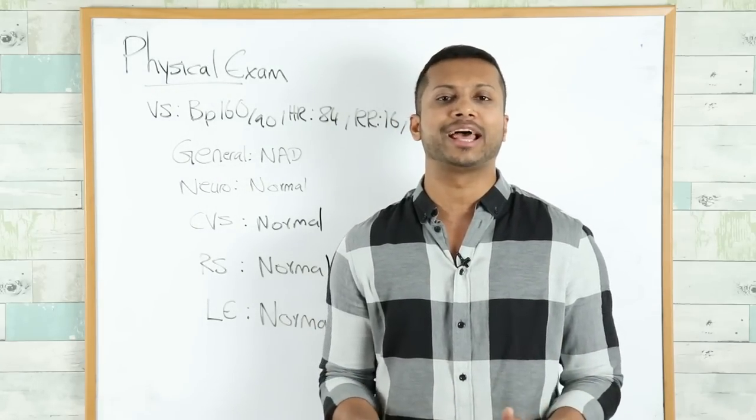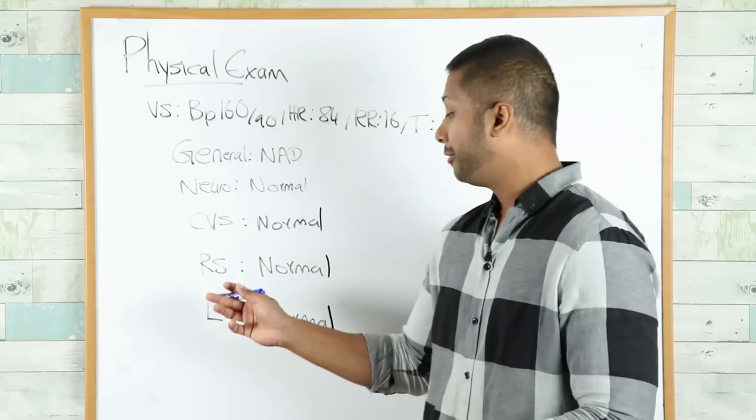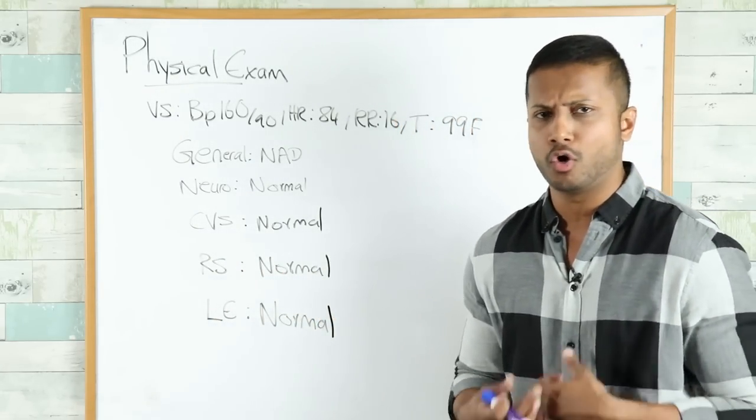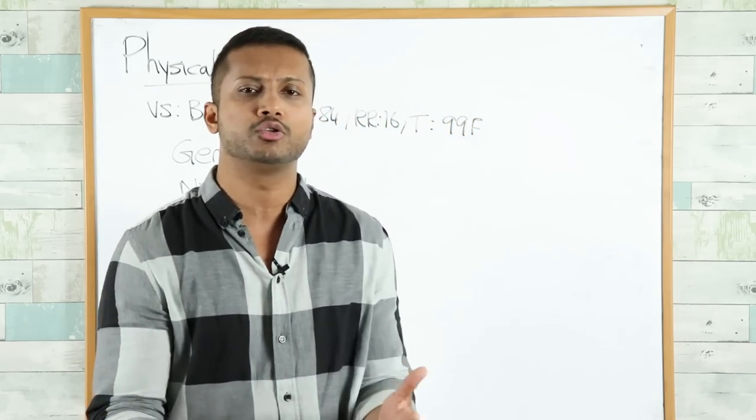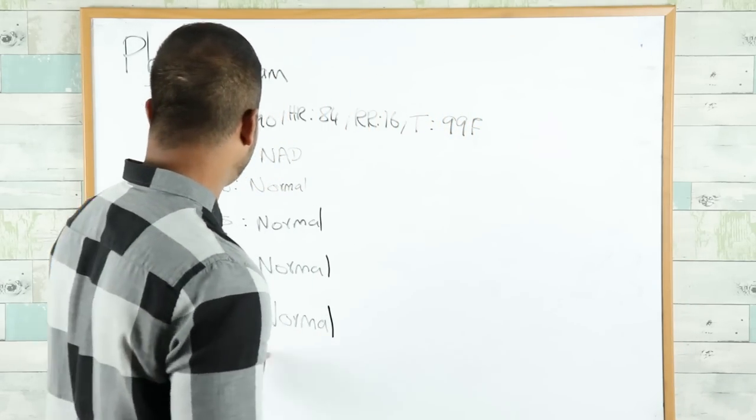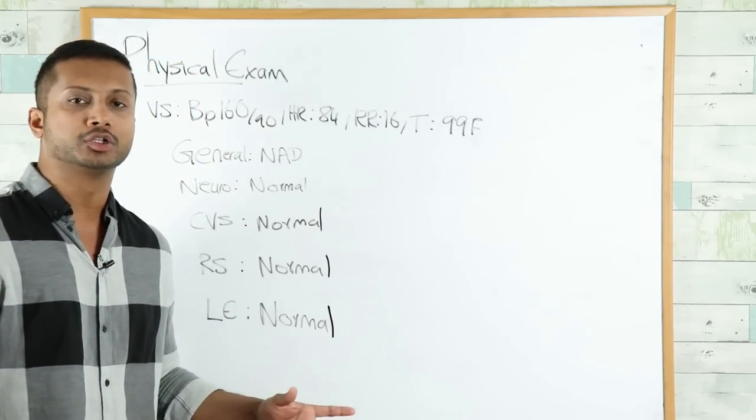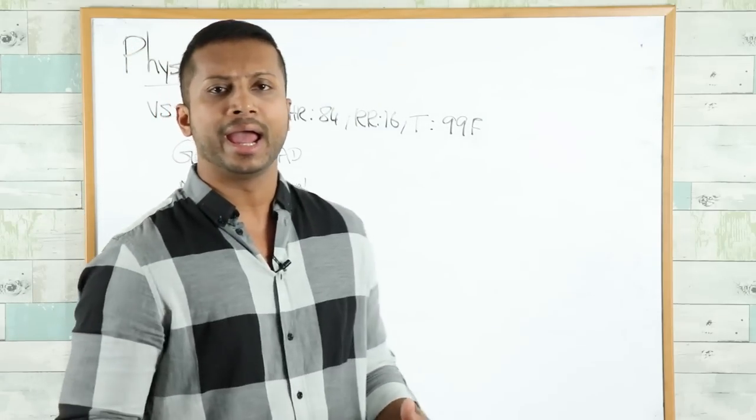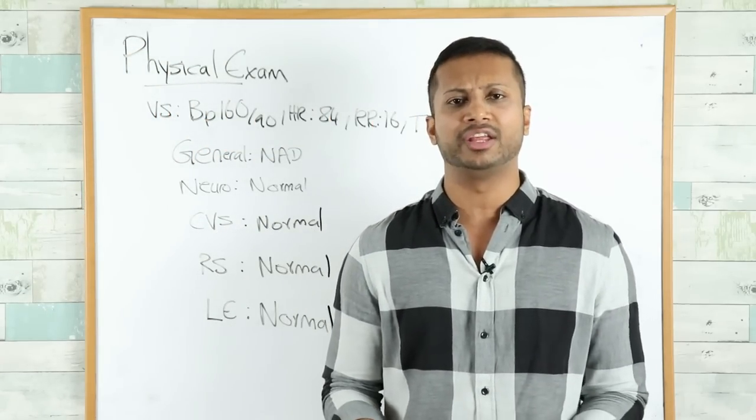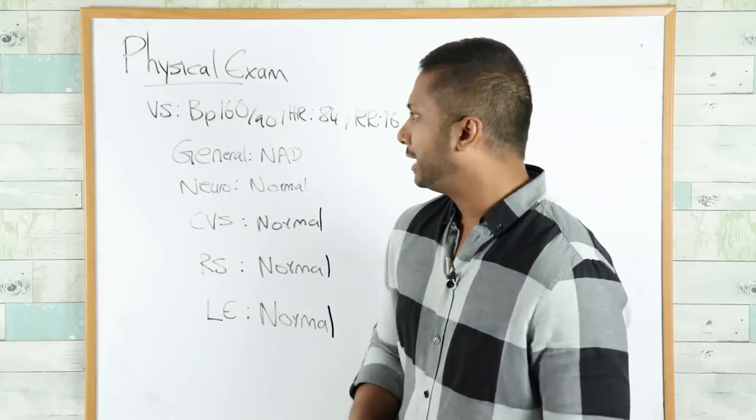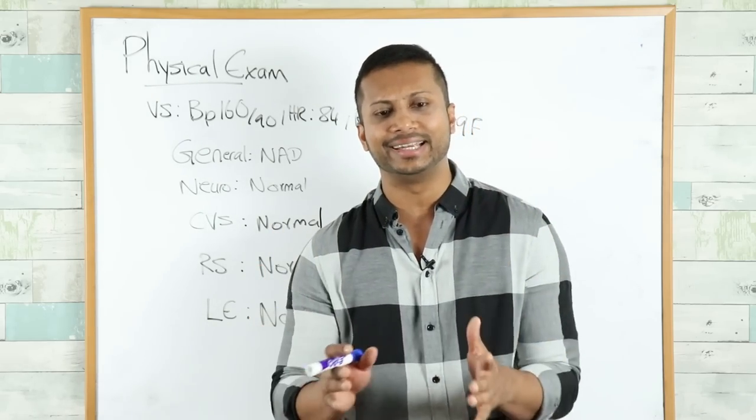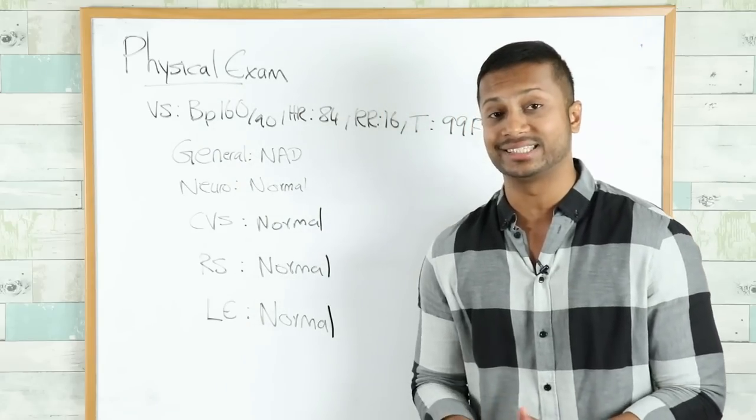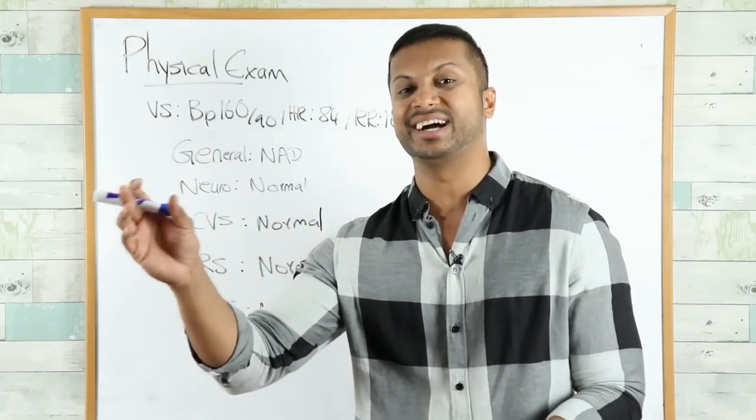Cardiovascular: S1 S2 heard, no rubs, gallops, or murmurs—also normal. Respiratory system is also normal: normal bilateral breath sounds, no wheezes, no crackles. Lower extremities are normal: there's no pitting pedal edema and there's no evidence of any form of DVT. So you have a physical examination that's completely normal, which is telling you this patient most likely has a transient ischemic attack.